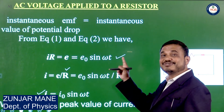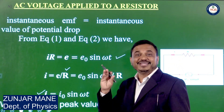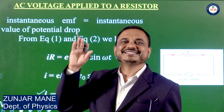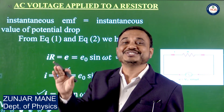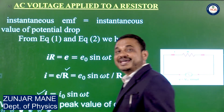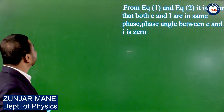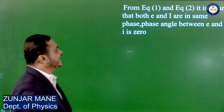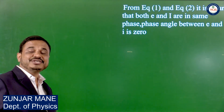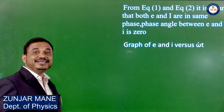We have E = E0 sin omega T and I = I0 sin omega T. So when AC is applied to a resistor, both EMF E and current I are not constant but vary with a sine function. From equations 1 and 2, it is clear that E and I are in the same phase — the angle between them is zero — because both follow the sine function with the same argument omega T. Therefore, both are in the same phase.